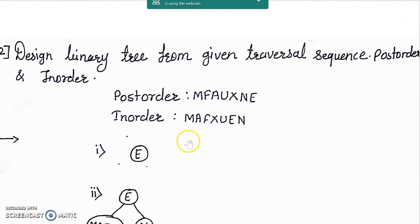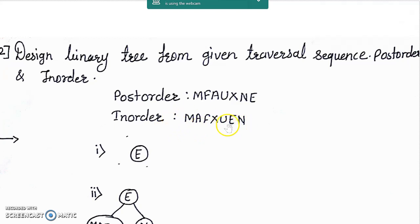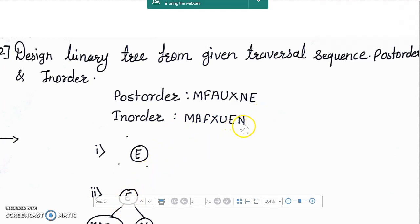We pick the element 'e' and draw it in step number one — this is our root node. After finding the root node, our next job is to find the left child and right child of the root node. To do this we use the in-order sequence given to us. We check where 'e' appears in the in-order sequence. All elements to the left of root node 'e' will be placed into the left subtree, whereas elements to the right of root node 'e' will be placed into the right subtree.